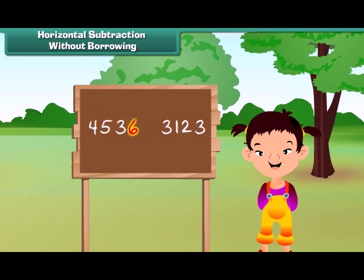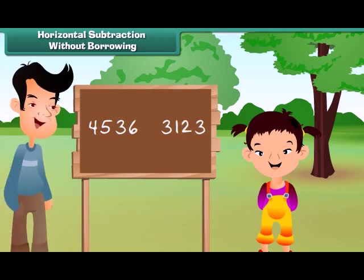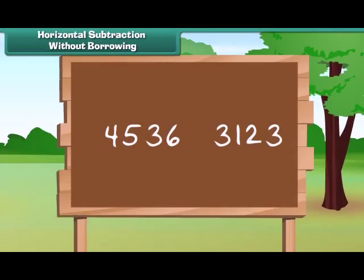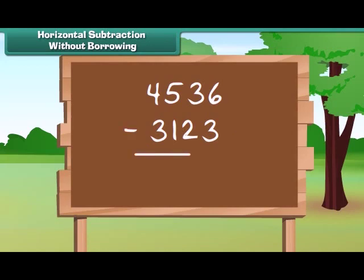Let us look at the numbers. 4536 and 3123. Her father asked her to tell the difference between the numbers. Let us help her. We write the bigger number above and smaller number below it. Now subtract the numbers at one's place, the ten's, next hundred's and at last thousand's. Thus, the answer obtained is 1413.